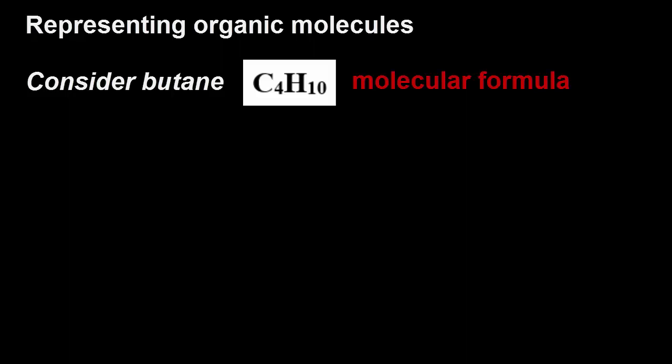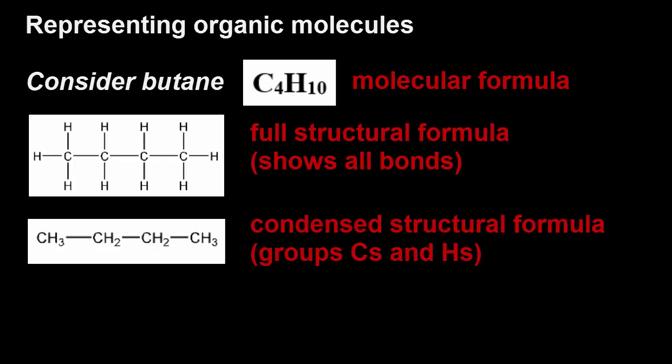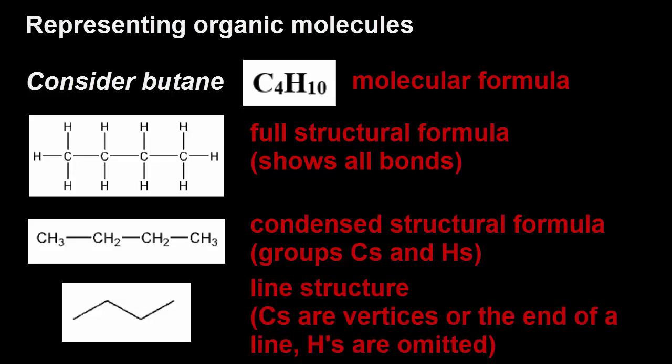So representing organic molecules. First of all, we can use what's called a molecular formula for butane. Then there's what's called a full structural formula, which shows all the bonds. A condensed structural formula groups the carbons and hydrogens together, while what's a little more convoluted but quite useful for textbooks is what's called a line structure.